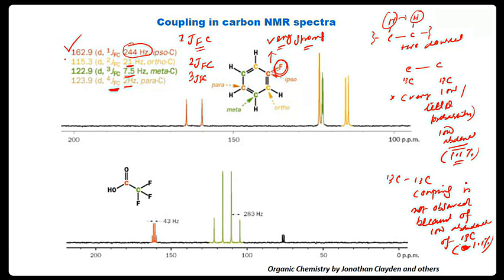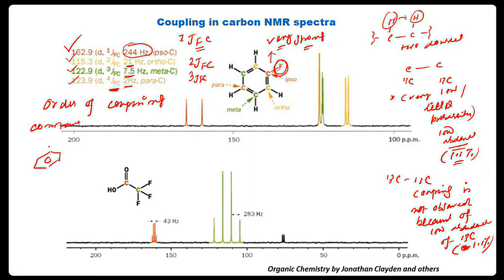The one-bond coupling (1J_FC) is the strongest, and then it decreases — quite lower and lower with increasing bond distance. If the question asks for the order of coupling constants for fluorine, we can easily say: 1J_FC > 2J_FC > 3J_FC > 4J_FC. The approximate values to remember are: 1J_FC ≈ 224–244 Hz, 2J_FC ≈ 21 Hz, 3J_FC ≈ 7.5 Hz, and 4J_FC ≈ 2.5 Hz.